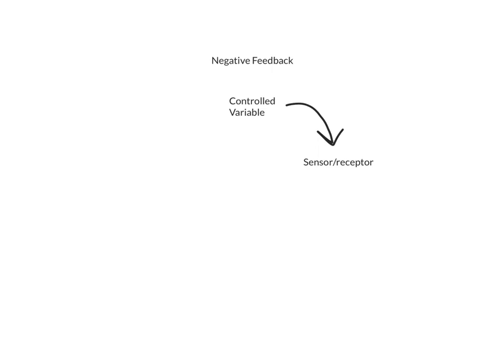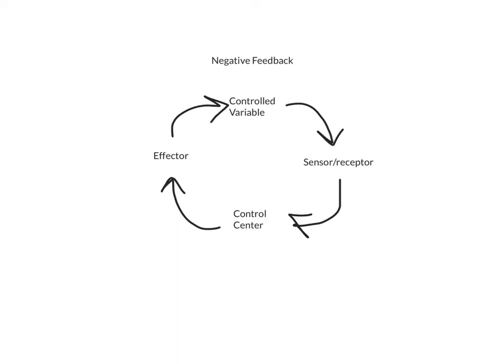The next step is that something in the body needs to be able to tell what to do with that information. I can sense a variable, but how do I know what to do with it? That comes from the control center. The control center will tell the body what to do. Many times your control center is part of your brain, but not always — there are some body functions that work even if the brain isn't exactly doing the job. Finally, we need to actually make something happen, and so the final step is the effector. The effector is typically a specific body part, function, or activity that will cause a change to the controlled variable and hopefully bring it back to where you want it.